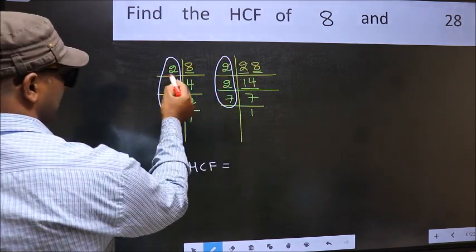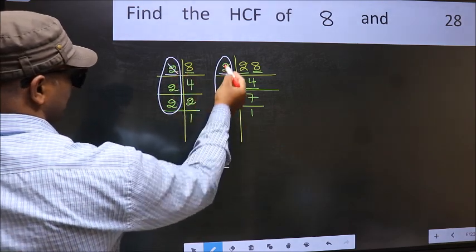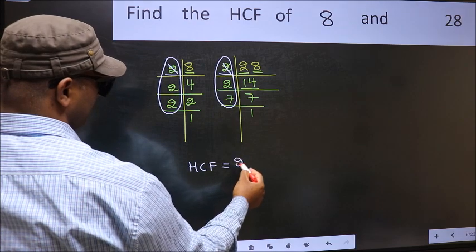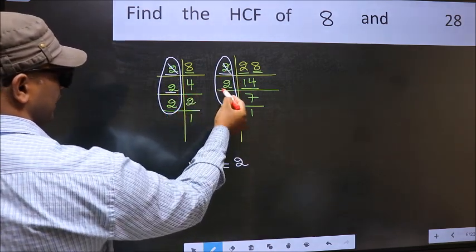Starting with the number 2. Do we have 2 here? Yes. So cut 2 right here. Next number 2. Do we have 2 here? No.